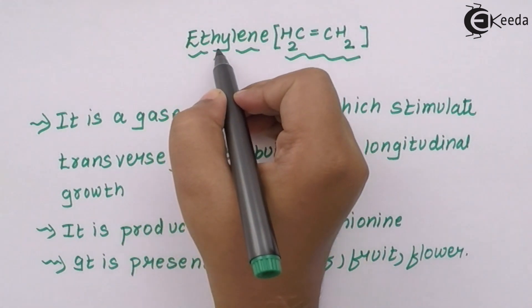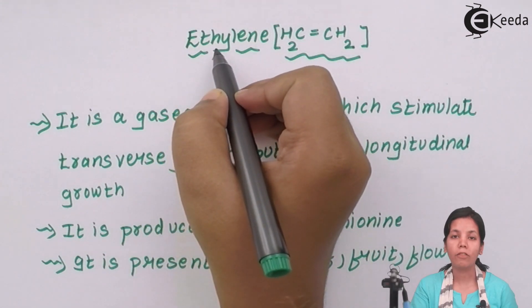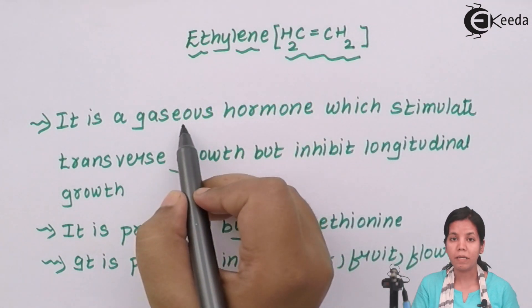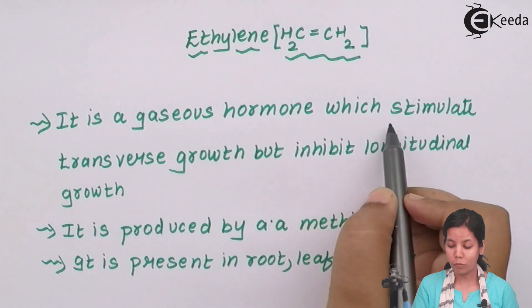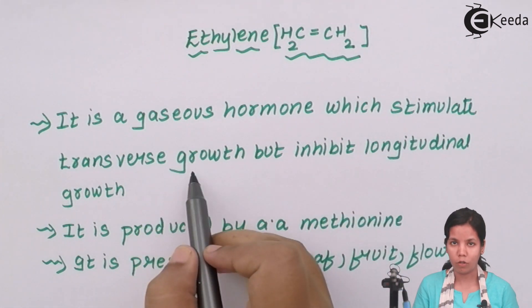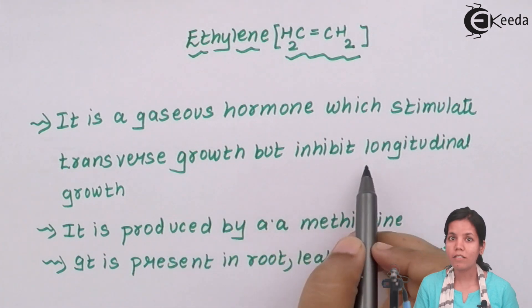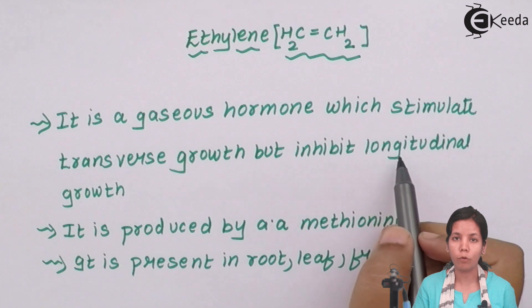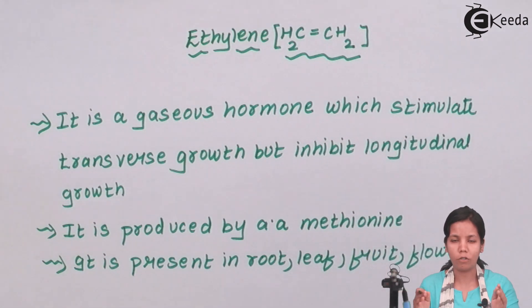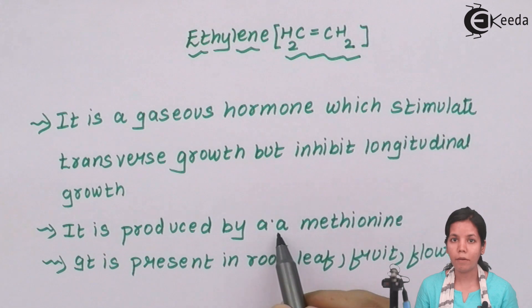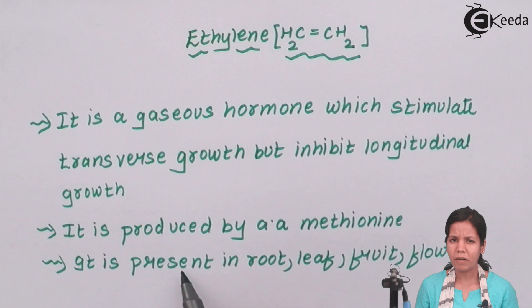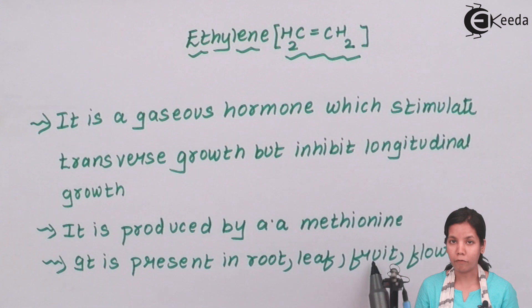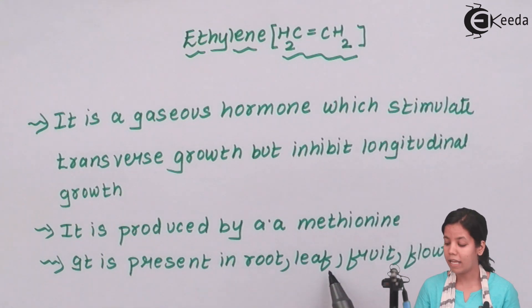Ethylene is a gaseous hormone — the hormone that helps fruit to ripen. Apart from all the acidic and basic hormones, Ethylene stimulates transverse or lateral growth but inhibits longitudinal growth, since fruits grow laterally not longitudinally. It is produced by the amino acid methionine. Ethylene is present in almost all regions of plants, but the majority is present in fruits, and it is also present in roots, leaves, and flowers.